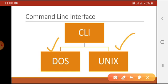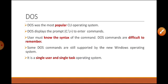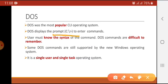CLI interface is used in DOS and UNIX operating systems. DOS stands for Disk Operating System and was the most popular command line interface operating system. DOS displays a prompt to enter commands, and we must know the syntax of the command. DOS commands are difficult to remember and therefore difficult to use. Some DOS commands are still supported by newer Windows operating systems. DOS is a single-user and single-task operating system, meaning only one user can operate the computer at one time performing only one task — the exact opposite of the Windows operating system we use today.